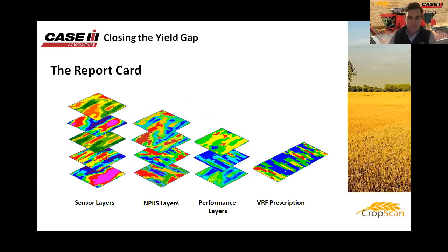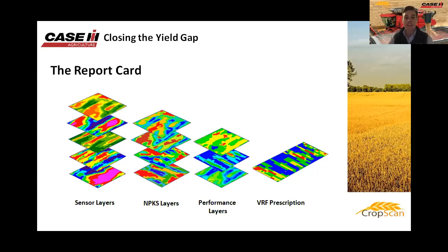Thank you, Matt. As Matt touched on, we've been working with Next Instruments for about five years. We really saw the opportunity with the protein layer linking in with the yield map — as Aaron also touched on — to bring that quality attribute across the landscape into play and analyze it alongside yield maps. By linking yield and protein together, we're getting quality and quantity combined, which becomes a real driver for how we can manage these fields into the future.